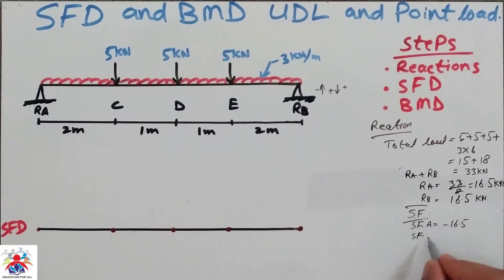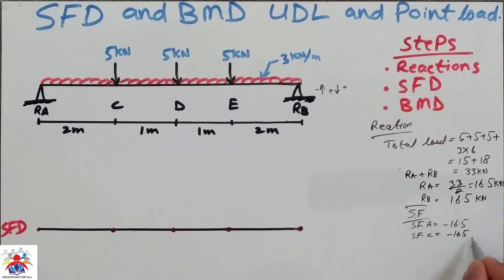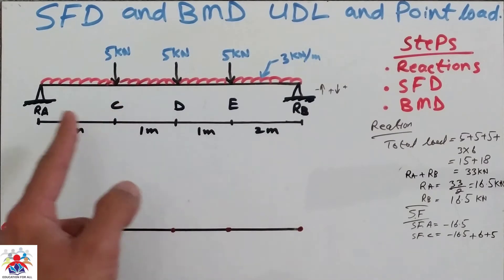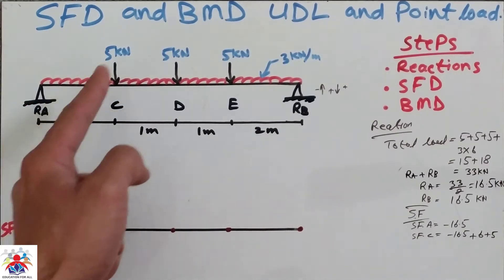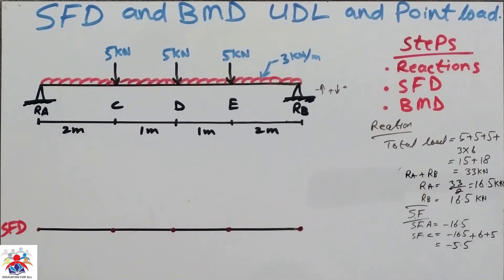Shear force at point C is going to be minus 16.5 plus 6 plus 5. From A to C we have three loads: one reaction at RA, one UDL contributing 6 kN, and one point load of 5 kN. So it is going to be minus 5.5 kilonewton.